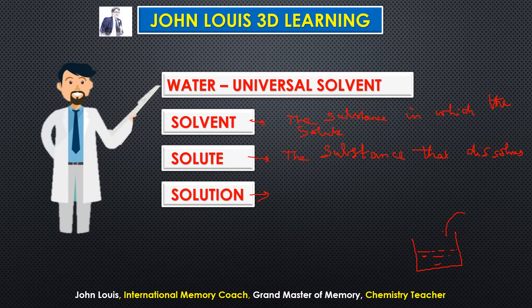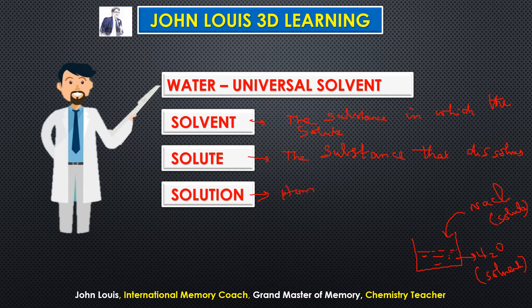Then what is meant by solution? It is a mixture of solute and solvent, but the mixture should be uniform. For example, you take water in a container and put ordinary common salt — sodium chloride dissolves, so sodium chloride is the solute and water is the solvent. Then what is solution? It is a homogeneous mixture of solute and solvent. Homogeneous means the concentration is the same everywhere — after sodium chloride dissolves in water, the concentration of sodium chloride should be uniform throughout. That is what is known as homogeneous, and that mixture is known as solution.